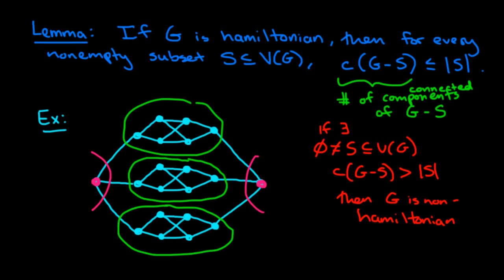So we can take S, let me just call this one u and v. We can take S equal to the set {u, v}, and then we can see that the number of components of G without this set S is three, but the size of S is two. So using this particular set S, we can show that this graph is not a Hamilton graph. So there's no Hamilton cycle of this graph.